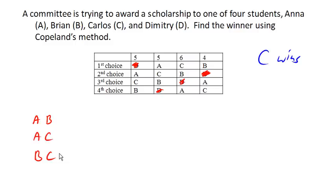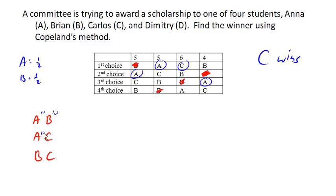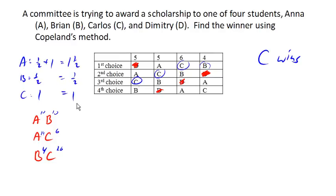Comparing A to B, it's 10 to 10 — tied, so A and B both get half a point. For A versus C, A wins 14 to 6, so A gets a point. For B versus C, it's 16 to 4 in favor of C, so C gets a point. When we total up all the points now, something unexpected has happened: even though D was not the winner, by eliminating D, we've had a change — now A wins.